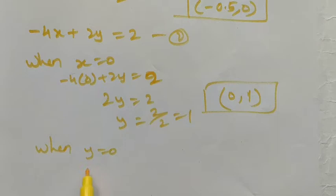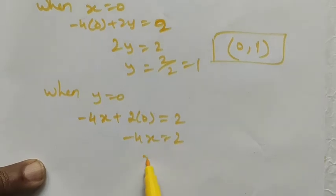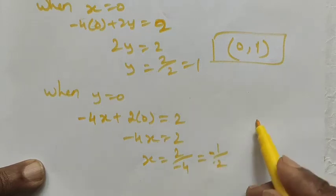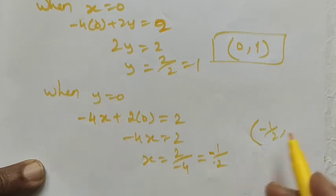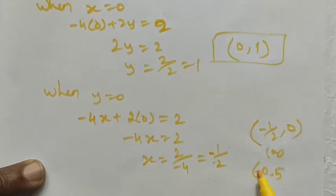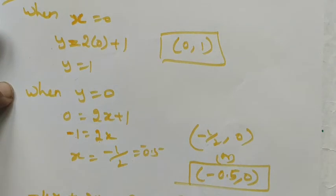Then when y is equal to 0, substituting: minus 4x plus 2 into 0 equals 2. Since 2 into 0 is 0, we have minus 4x equals 2, so x equals 2 divided by minus 4, which is minus 1 divided by 2, or minus 0.5. The ordered pair is (minus 0.5, 0). Notice that both equations give the same ordered pairs.